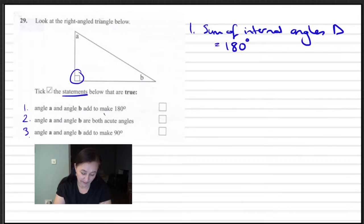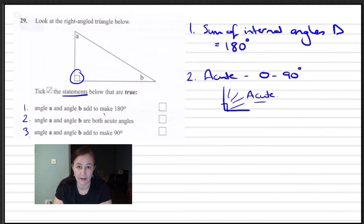Number two, angle A and angle B are both acute. So for this you need to know what an acute angle is. An acute angle is something between 0 and 90 degrees. So we've got a 90 degree right angle and your acute will fall somewhere between this, anywhere between that.